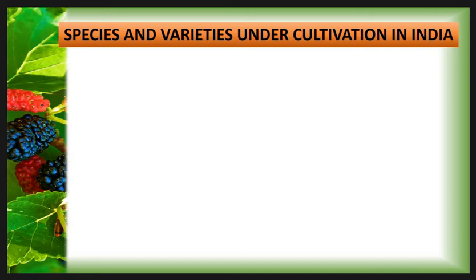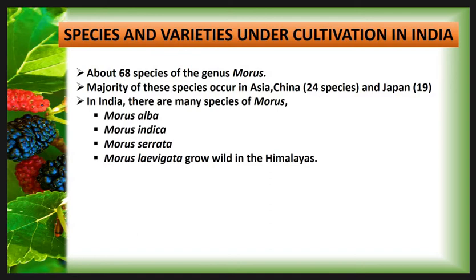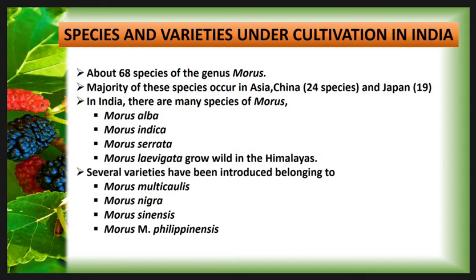The first aspect is species and varieties under cultivation in India. There are about 68 species of the genus Morus, the majority occurring in Asia — especially China with 24 species and Japan with 19 species. Continental America is also rich in Morus species. The genus is poorly represented in Africa, Europe, and the Near Eastern countries, and is not present in Australia. In India, species such as Morus alba, Morus indica, Morus serrata, and Morus lavigata grow wild in the Himalayas. Introduced varieties belong to Morus multicaulis, Morus nigra, Morus sinensis, and Morus filipinensis.